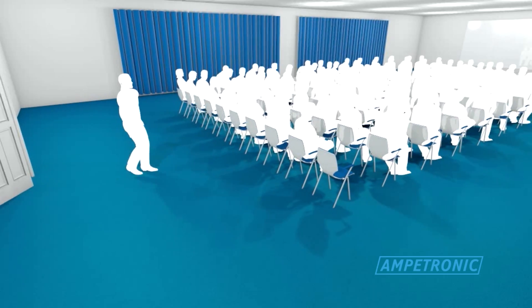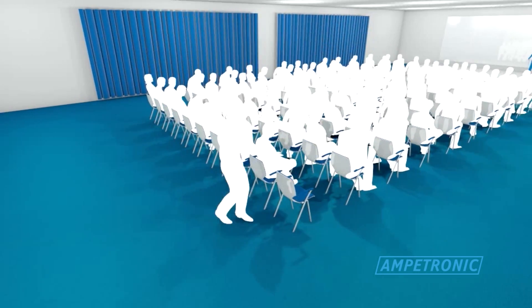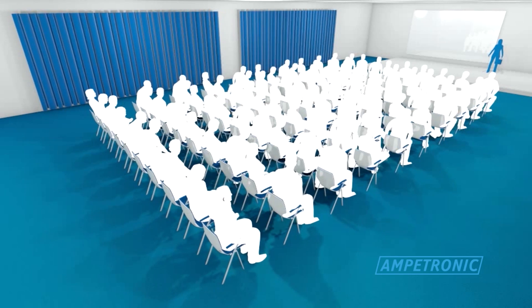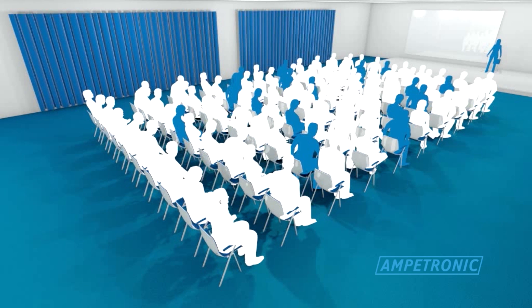A common place to encounter an area coverage loop facility is in a conference room. As many as one in every six people experience some degree of hearing loss, a number that represents a significant proportion of the population.